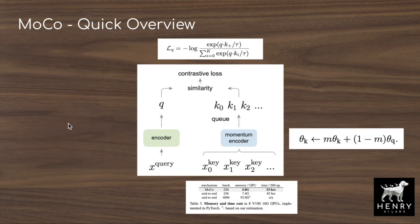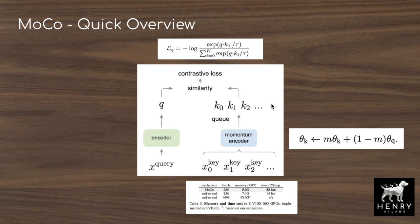In a quick overview of the momentum contrastive algorithm: the high-level idea is to make the query similar to its positive key and dissimilar to the negative keys, using a softmax loss function. One end-to-end approach would use encoders for both the query and keys, but this requires gradients through both encoders. Momentum Contrast shows you don't need to do this — you only take gradients from the query encoder and update the key encoder separately via a momentum update.